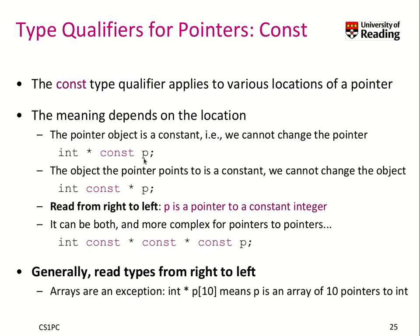Here we see one example where we have int star CONST P. I really recommend you to read from right to left. So it means P is a constant pointer to an integer. That means the pointer object is constant, meaning we cannot change the pointer, but wherever the pointer points to, we may be able to change.